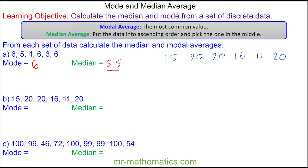In question B, you can see the mode or modal average is 20, as it is more common than any other value. To work out the median, we're going to write them in ascending order, so we begin with 11, and then 15, followed by 16 and 20, and two more 20s.